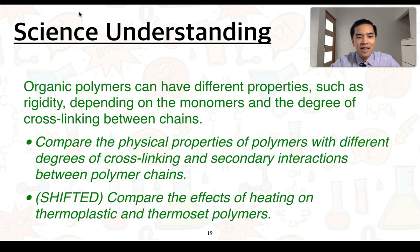This is the next understanding. Organic polymers can have different properties, such as rigidity, depending on the monomers and the degree of cross-linking between chains. We'll need to be able to compare the physical properties of polymers with different degrees of cross-linking and secondary interactions between polymer chains.